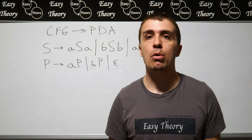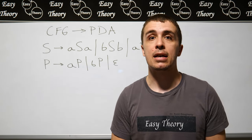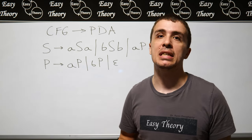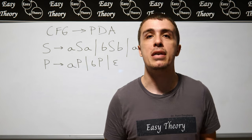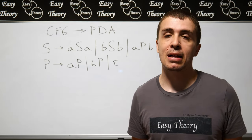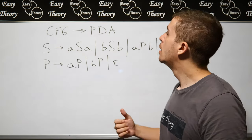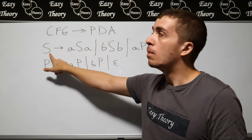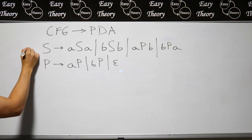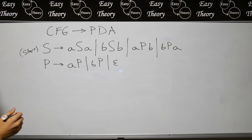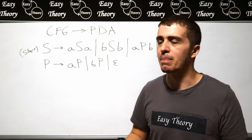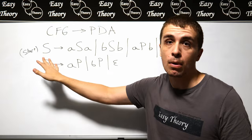This video is going to go over the CFG to PDA conversion for a particular context-free grammar — in this case, the set of all strings that are not palindromes. Let's review the grammar. We have the start variable here, which I should indicate. P could be the start variable, but it doesn't reach S, so it doesn't really make sense, but it's important to mark the start variable.